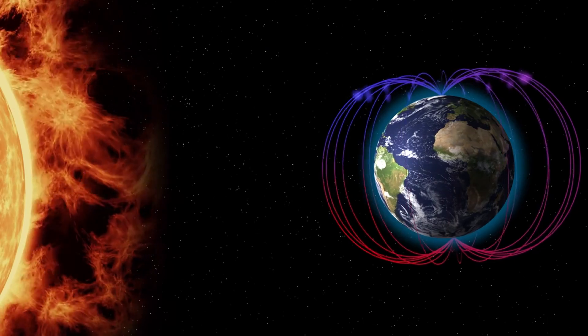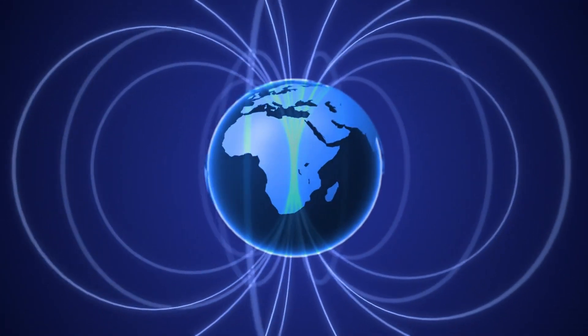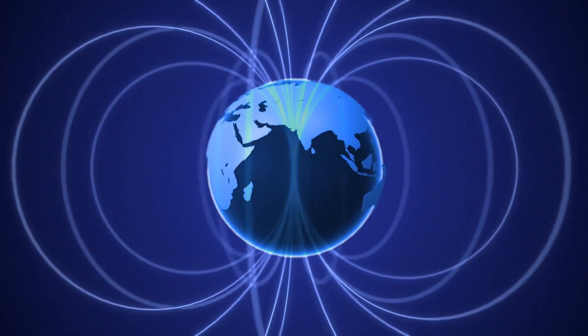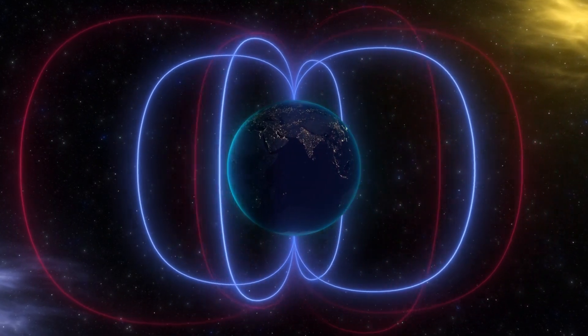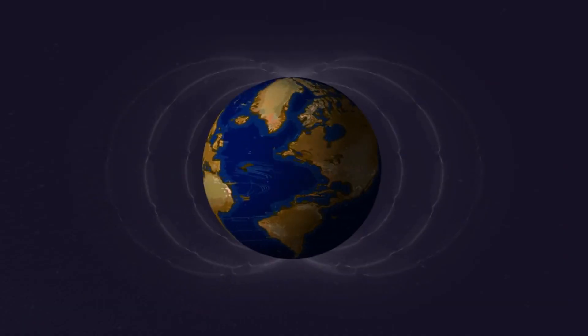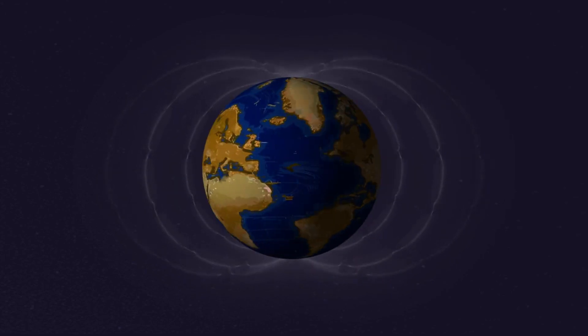The Earth's magnetic field is an invisible force field that surrounds our planet. It's generated by the movement of molten iron and nickel in the Earth's outer core. This movement creates electric currents, which in turn produce magnetic fields. The magnetic field extends far into space, creating a region known as the magnetosphere.